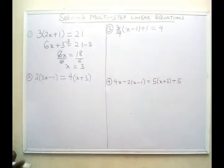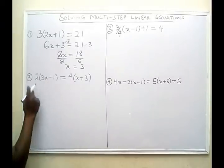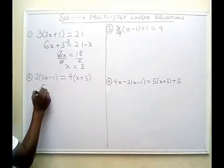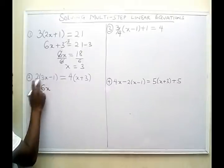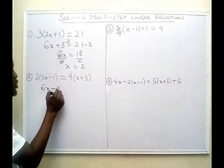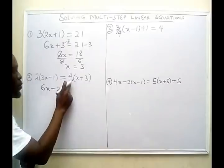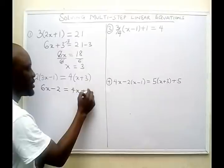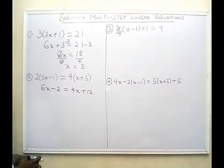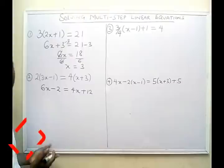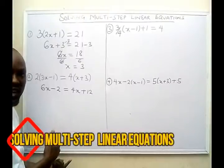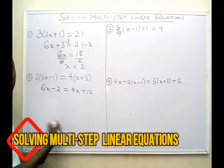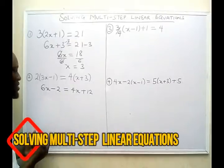Let's solve the second problem. The first thing to do is to remove the brackets. 2 times 3x gives me 6x, and 2 times minus 1 gives me minus 2, equals 4 times x which gives me 4x, and 4 times plus 3 gives me plus 12. So now I want to strike a balance — I want the variables on one side, the numbers on the other side; specifically, variables on the left and numbers on the right.